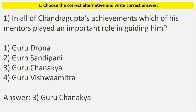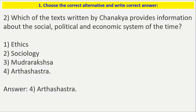The first question asks: among all of Chandragupta's achievements, which of his mentors played an important role in guiding him? The options are Guru Dhrauna, Guru Sandeepani, Guru Chanakya, and Guru Vishwamitra. The correct answer is Guru Chanakya.